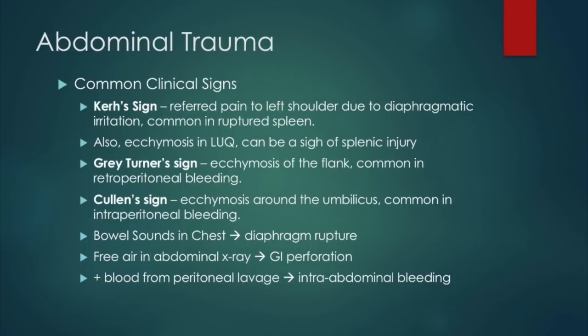The next sign is Cullen's sign, and this is ecchymosis or bruising around the umbilicus, which is very common in intraperitoneal bleeding and also pancreatic issues such as hemorrhagic pancreatitis. When you hear bowel sounds in the chest, you can consider diaphragm rupture. When you see free air on the abdominal x-ray, typically think of GI perforation. When you get positive blood from a peritoneal lavage, you can think intra-abdominal bleeding.